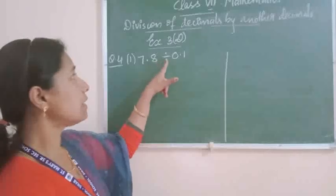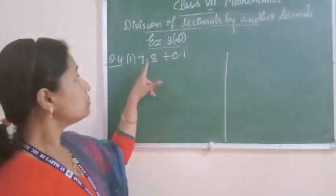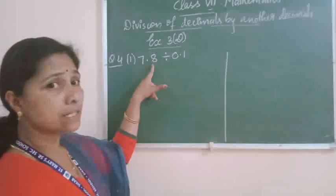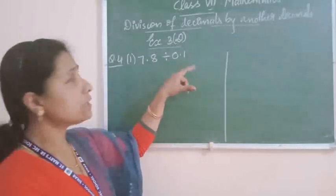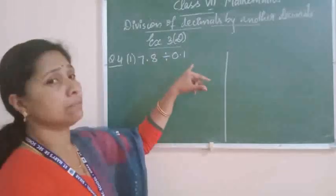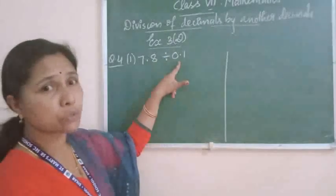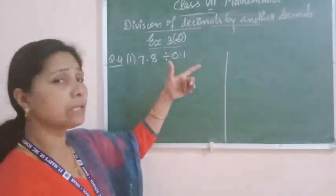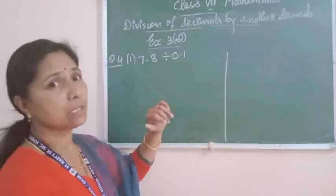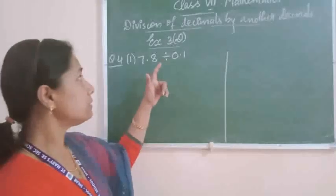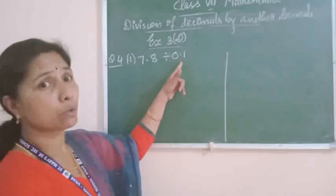In that question, 7.8 divided by 0.1. Here in this question, both the numbers — the dividend is a decimal number and the divisor is also a decimal number. For dividing a decimal by another decimal, first you have to change the divisor into a natural number. Changing a divisor into a natural number means you have to write it without a point. So first of all, before changing that, you have to check whether both the given decimals are like decimals or not.